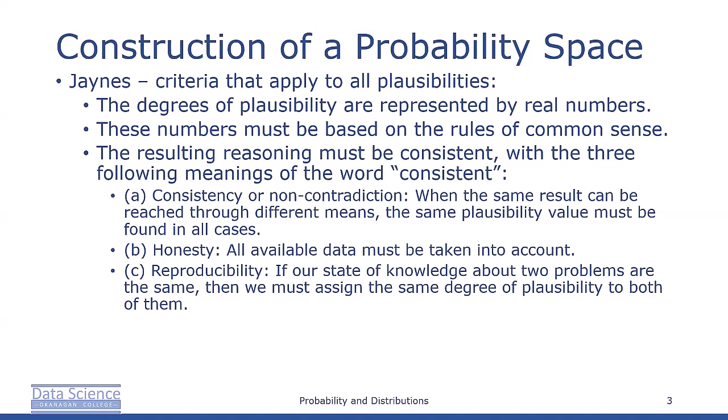Jaynes identified three mathematical criteria which must apply to all plausibilities. The degree of plausibility are represented by real numbers. These numbers must be based on rules of common sense.